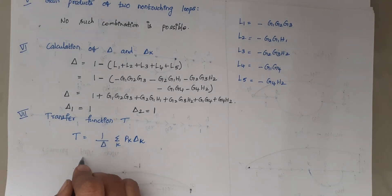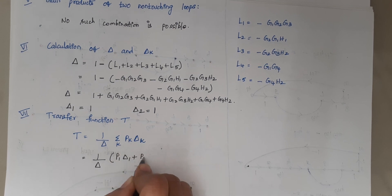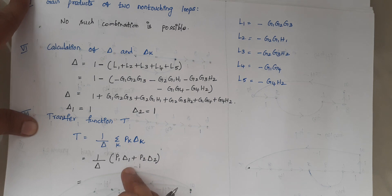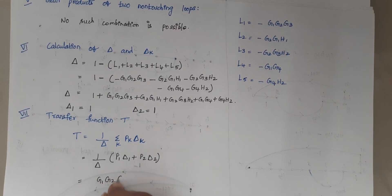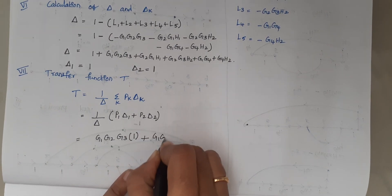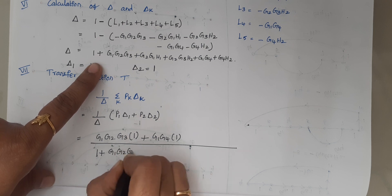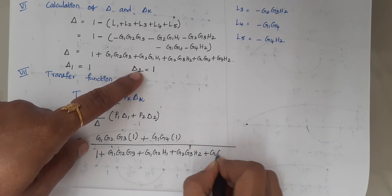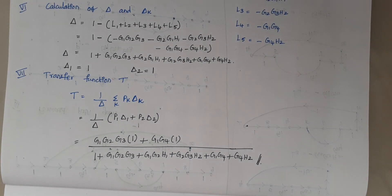Substituting into the transfer function formula using Mason's gain formula: C(S)/R(S) = (P1·Δ1 + P2·Δ2) / Δ = (G1G2G3 × 1 + G1G4 × 1) / (1 + G1G2G3 + G1G2H1 + G2G3H2 + G1G4 + G4H2). This is the final answer. I hope you people understand this problem well. Thank you.